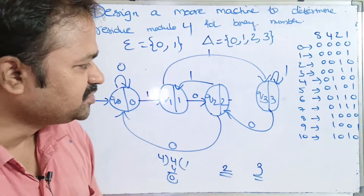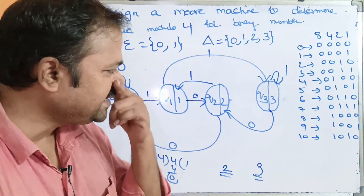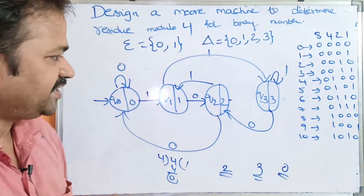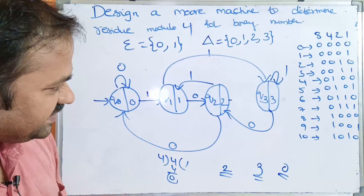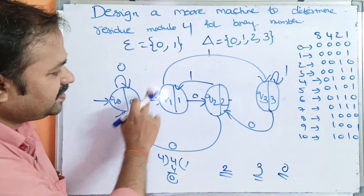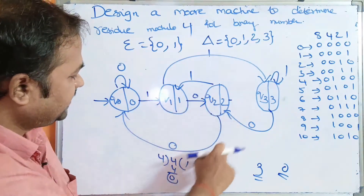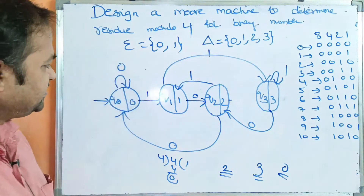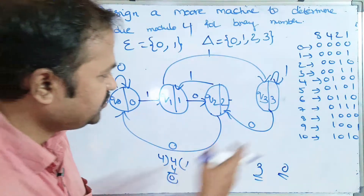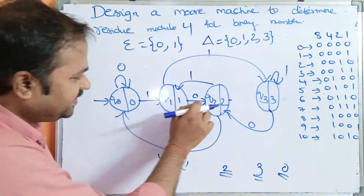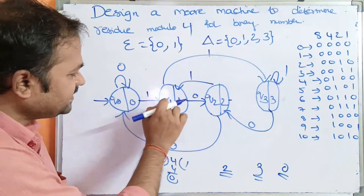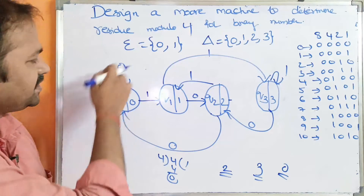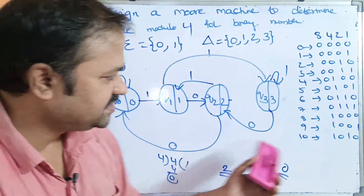For 8, which is 1000 in binary: 8 modulo 4 is 0, so we need to be at Q0. Applying 1, 0, 0, 0: Q0 on 1 goes to Q1, Q1 on 0 goes to Q2, Q2 on 0 goes to Q0, Q0 on 0 stays Q0. This transition is already established.